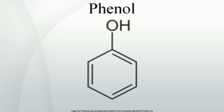Phenol was discovered in 1834 by Friedlieb Ferdinand Runge, who extracted it in impure form from coal tar. Runge called phenol carbolic acid. Coal tar remained the primary source until the development of the petrochemical industry. In 1841, the French chemist Auguste Laurent obtained phenol in pure form. In 1836, Auguste Laurent coined the name 'phène' for benzene, the root of the word phenol. In 1843, French chemist Charles Gerhardt coined the name phenol.